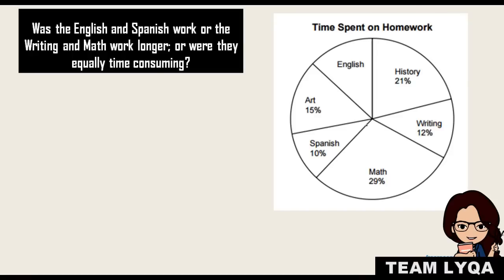Next question: was English and Spanish work or writing and math work longer, or were they equally time-consuming? So again, we said English is 13%. So the question is asking if English and Spanish are the same as writing and math. Let's look: English is 13, Spanish is 10, writing is 12, and math is 29. So this would be 23, this would be a little more than 40, so this is actually 41. So the answer would be writing and math is longer.